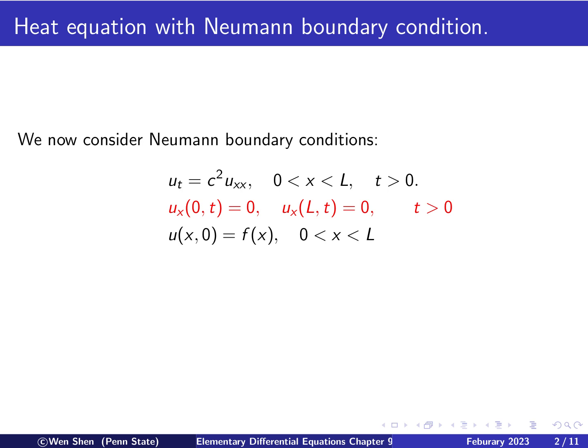So let me explain in detail what that means. So here we have the heat equation, and then here we have the initial temperature being prescribed, and then here in red are the boundary conditions at the two end points.